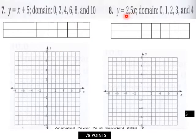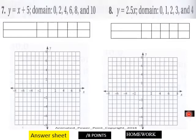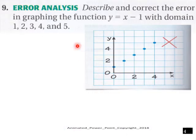Page three: graph these two functions, seven and eight. You got a table here that you can fill in if you need to. Eight points for page three. Page four: error analysis - to describe and correct what's going